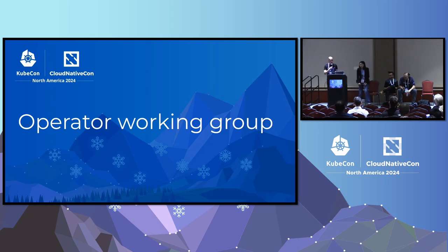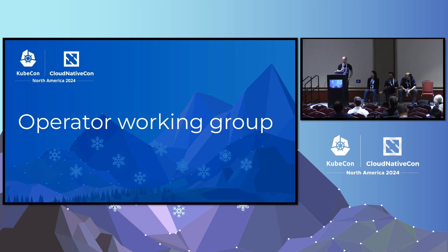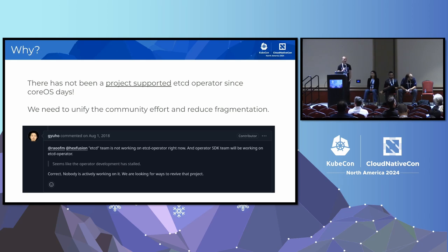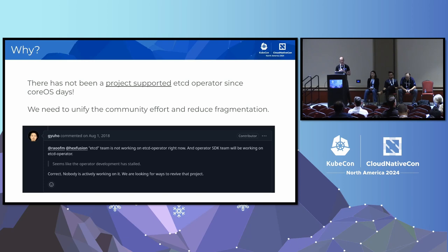I'd like to introduce our new operator working group. As a Kubernetes special interest group, we can use Kubernetes project mechanisms for getting work done — one of those is the working group construct. We've started this new working group to put together, finally, an officially project-supported operator for etcd. It's something that's been a long time coming and long time missing. If you think back to around 2018 CoreOS days, some of you may be familiar with the old CoreOS etcd operator. Since that was left unmaintained, the community has fragmented into a variety of projects — some open source, some internal — and we need to unify that effort now.